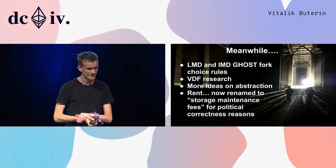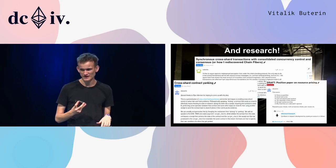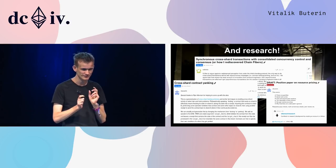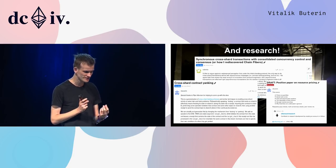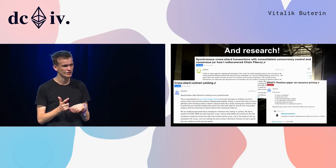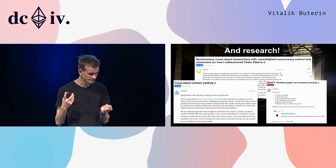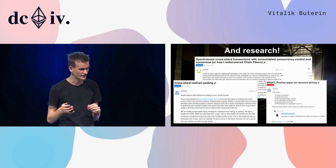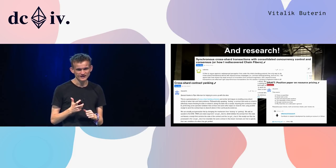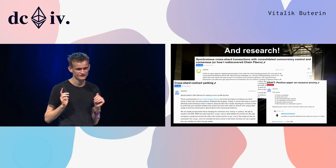More ideas on abstraction — allowing individual users to choose their own signature algorithms for their accounts. More ideas on rent, which we renamed to 'storage maintenance fees' for political reasons. I made a post on cross-shard contract yanking, which generalizes the traditional distributed systems concept of locking into something that makes sense in an asynchronous cross-shard context. I also wrote a paper on resource pricing including ideas about an optimized fee market and storage maintenance fees. Casey here wrote a post on synchronous cross-shard transactions. Casper CBC research also expanded into its own brand of sharding — totally not called Vlarding, because Vlad absolutely hates that term.